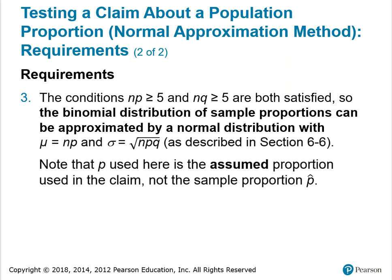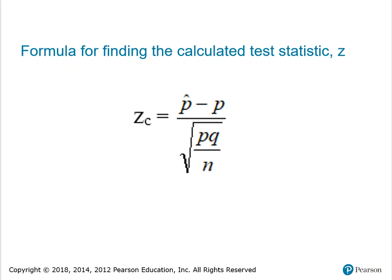Note that P used here is the assumed proportion used in the claim, not the sample proportion P-hat. The formula for finding the calculated test statistic Z: Z sub C is equal to P-hat minus P, that quantity divided by the square root of P times Q divided by N.